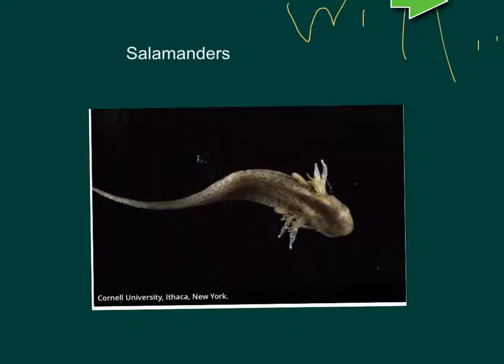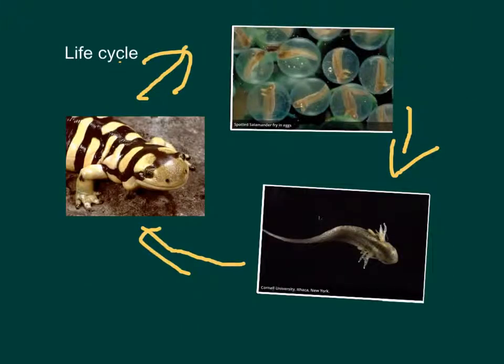This is a larva. It's part of the salamander life cycle. This is a picture of the life cycle. The salamanders have eggs inside of them. The larva is from the first page and then it turns into this big salamander.